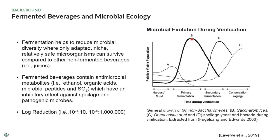I also wanted to touch on log reduction before we go into some of the other technologies for microbial stabilization. Log reduction is a metric to measure the reduction of a microbial population — 10 to the 6 would be a reduction of a million cells per mL, for example. A higher log reduction translates to a higher microbial stabilization or antimicrobial effect.